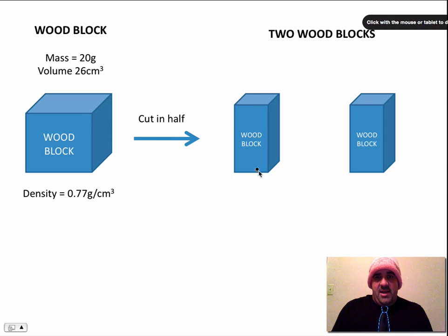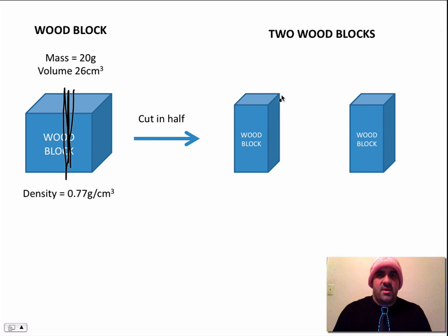So what happens now? We cut this wood block in half. We slice this right down the middle. That's not really the middle, but we slice it down the middle. And now we have two pieces.